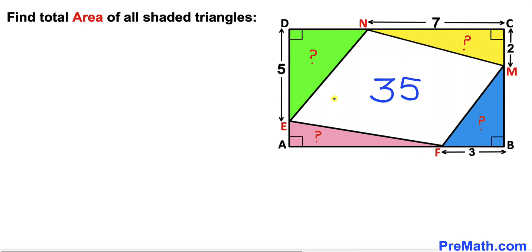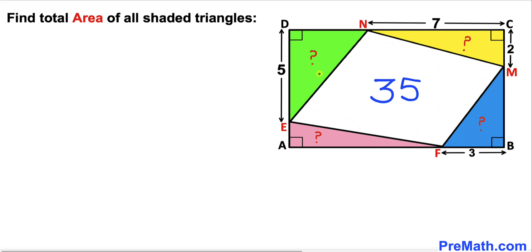Welcome to PreMath. In this video we have got rectangle ABCD such that we have quadrilateral EFMN with an area of 35 square units, and as a result four right triangles are conceived. We are going to calculate the total area of these four triangles: the green, pink, blue, and yellow triangles.